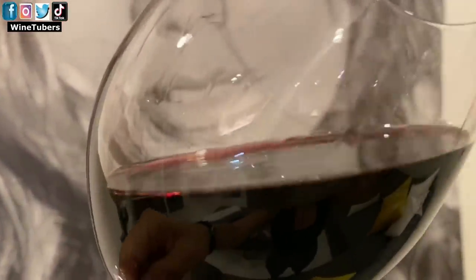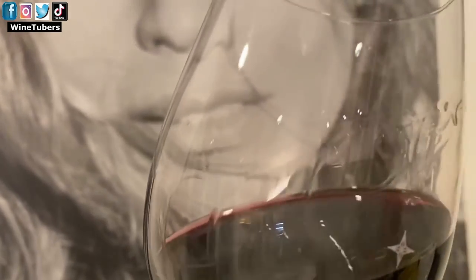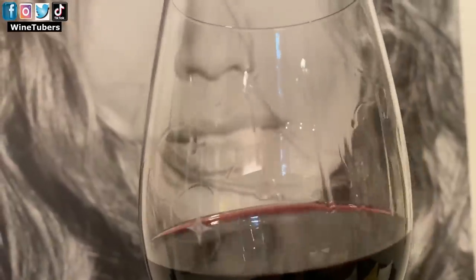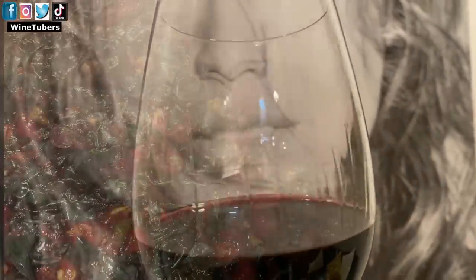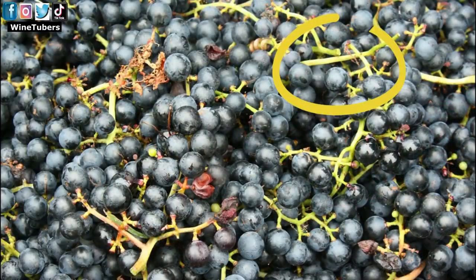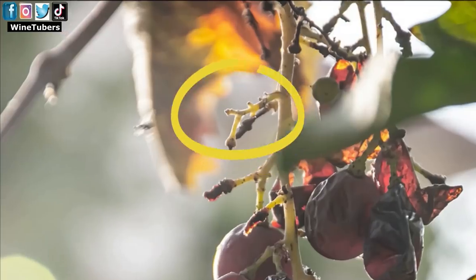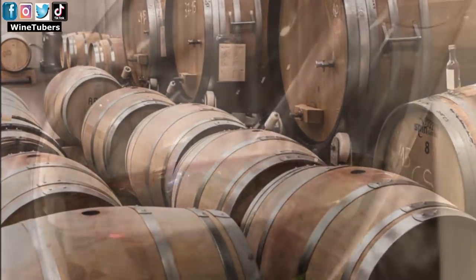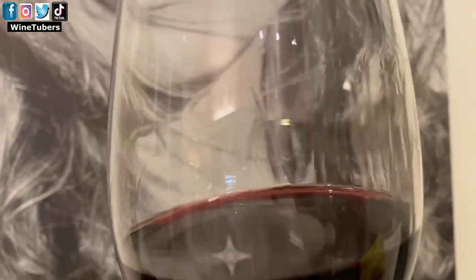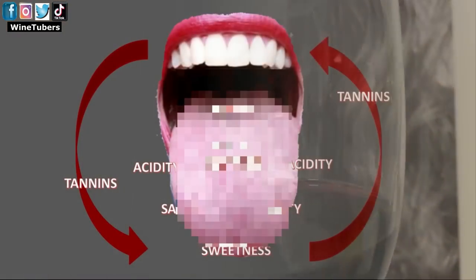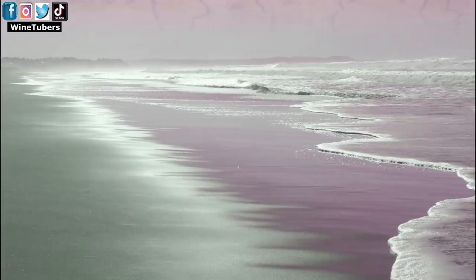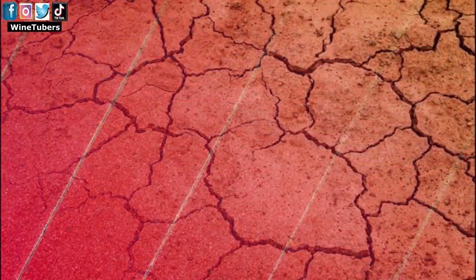To do so, we must first understand what tannins are, which is one of the most popular words used during a wine tasting. Tannins are a natural and vegetable chemical substance that comes from the skin, the stems, the seeds or the wood of the barrels. They are more abundant in red wines than in whites. There are different tannins. Their presence in the mouth is easily recognizable since it appears as a sensation of astringency, roughness or dryness in the gums, inner lips and palate.